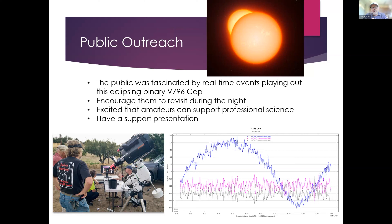I think it's very useful to have a support presentation to explain to the public what an eclipsing binary is, how the light curve is affected, and why we do these measurements. I had a 14-15 slide PowerPoint available to go through with the public throughout the night. The public was also really interested — and quite excited — to hear that amateur astronomers can support professional science through photometry, including supporting telescopes like Hubble and James Webb.